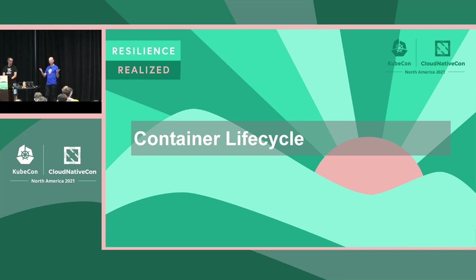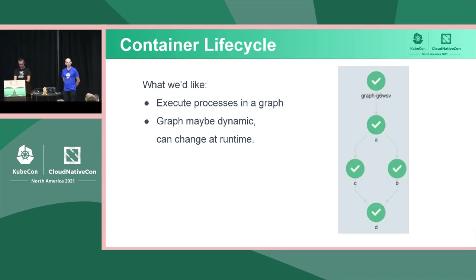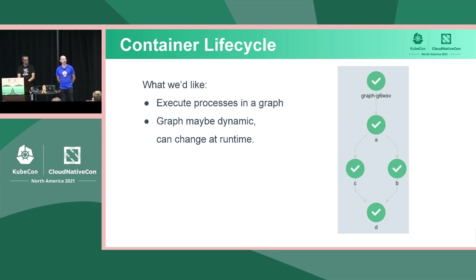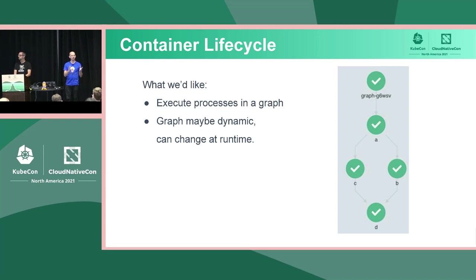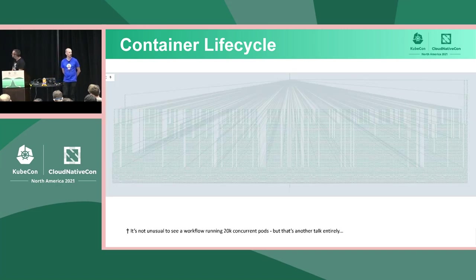The great thing about this talk is we get to talk about things we have in common, and one of those things is container lifecycle. Both Argo and Tekton execute processes in graphs — directed acyclic graphs — which Kubernetes doesn't support out of the box. To make things more complicated, we can modify those graphs at runtime, so we don't necessarily even know what containers are going to run when we start. We run graphs up to 20,000 or 30,000 pods sometimes.